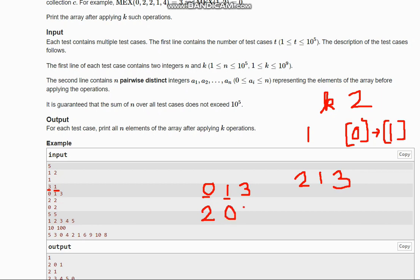So now the array becomes 2, 0, 3. And then we take MEX of 3, so it will be 1 because 1 doesn't occur. So we have 2, 0, 1 as the final array.